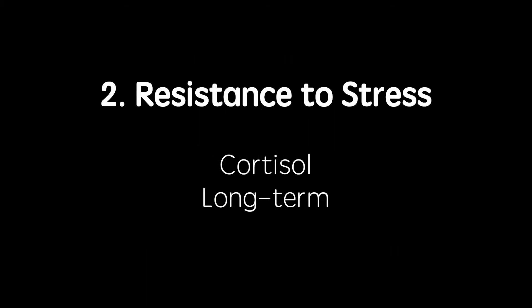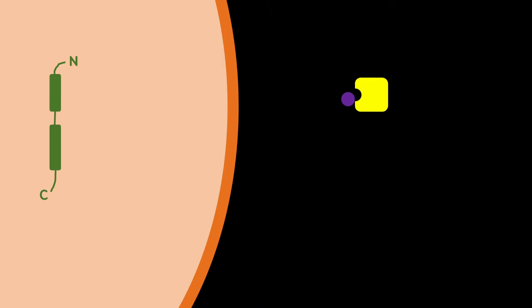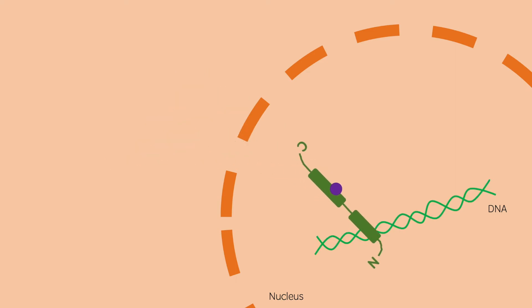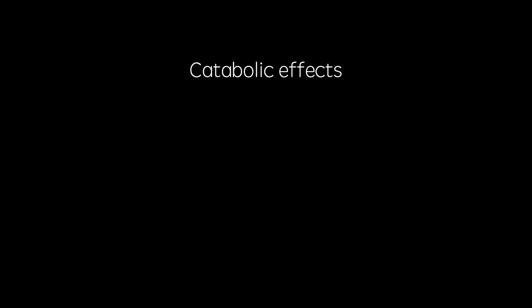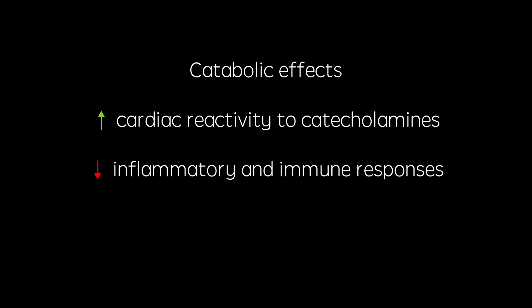The second stage of physiological stress is the resistance of stress, a more long-term solution which is mediated by cortisol secreted by the adrenal cortex. When cortisol reaches target tissues, a carrier protein transports it across the plasma membrane and it dissociates and binds to its intracellular receptor. This receptor translocates into the nucleus of the cell and binds to the DNA, increasing the transcription of certain genes. This includes those which increase catabolism and cardiac reactivity to catecholamines, as well as those which decrease the inflammatory and immune responses and any non-essential functions such as the reproductive system.